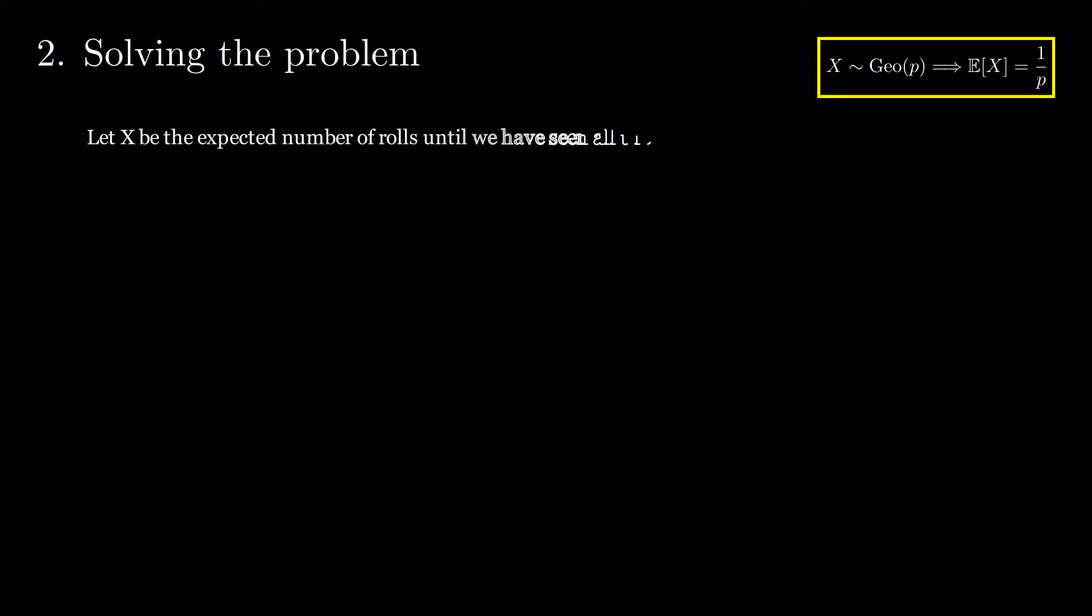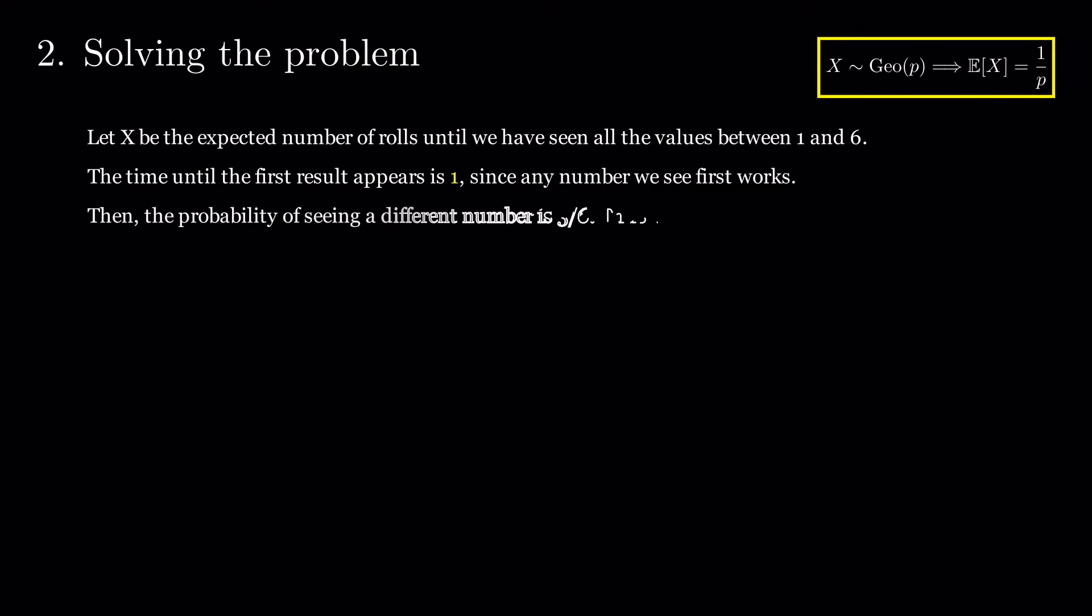Let X be the expected number of rolls until you have seen all the values between 1 and 6. The time until the first result appears is 1, since any number we see first works. Then, the probability of seeing a different number is 5 over 6. The number of rolls until a new number appears follows a geometric distribution, so the expected number of rolls until a different value is seen is 6 over 5.